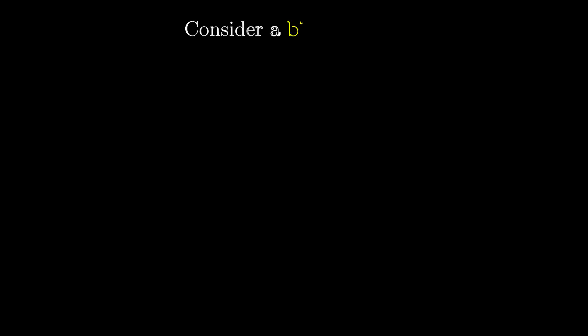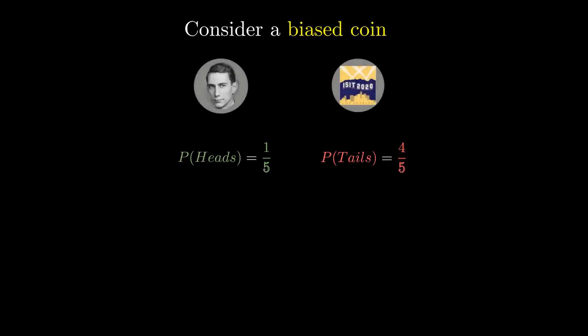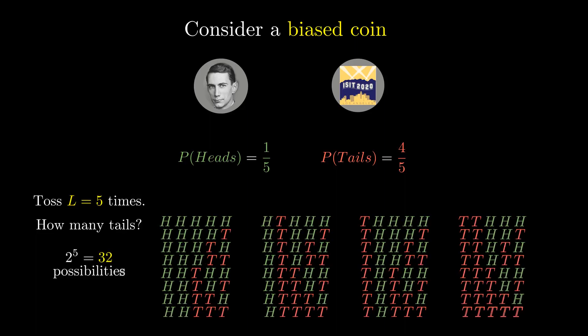Consider a biased coin which is 4 times more likely to turn up tails than heads. Suppose we toss it 5 times — how many tails do you expect? Note that there are 32 possible outcomes in the form of these sequences. Let us look at one of them, say the all-tails sequence, and compute its probability.